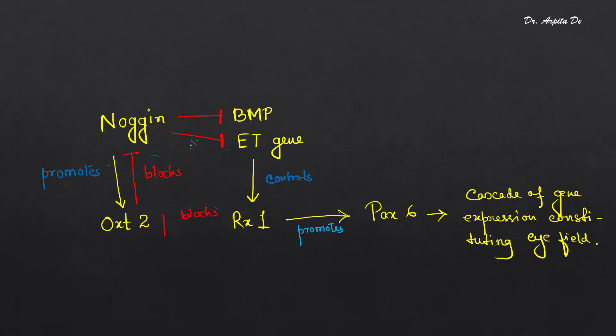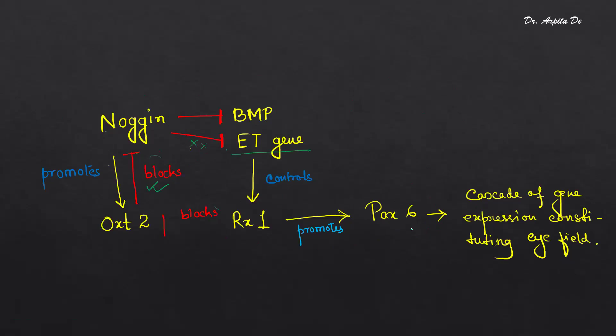So coming back to this flowchart: Noggin is inhibiting BMP and inhibiting ET. ET controls RX1. Once OTX2 blocks Noggin, ET becomes functional and controls RX1, and RX1 promotes PAX6. Once PAX6 is promoted, a cascade of gene expression constituting eye field will occur. This flowchart or scheme has to be very clear in your mind, as it helps answer many questions from this portion.